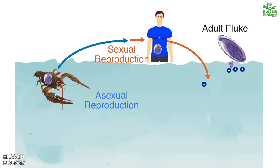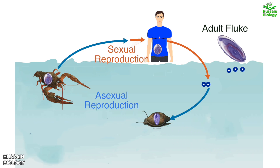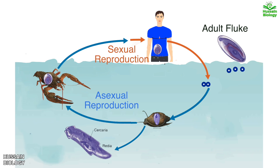Upon reaching fresh water, the eggs hatch into meresidium. These free-swimming meresidium enter the snail, as shown in the diagram. Within the snail, meresidium develops into rydia, which reproduces asexually to produce more rydia. Several circaria also develop within the rydia, as shown in the diagram.